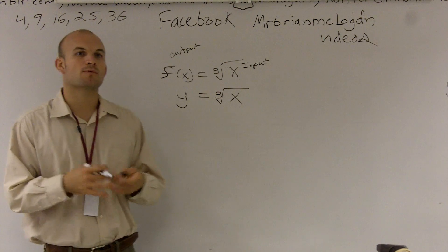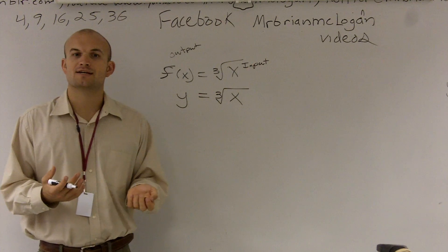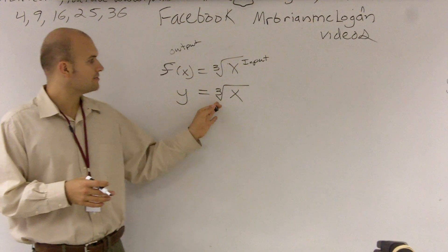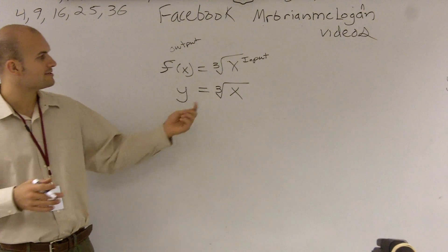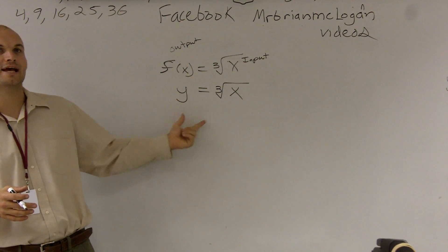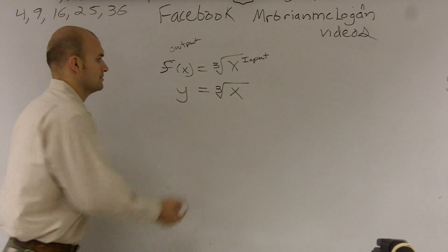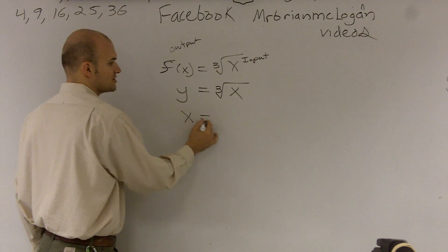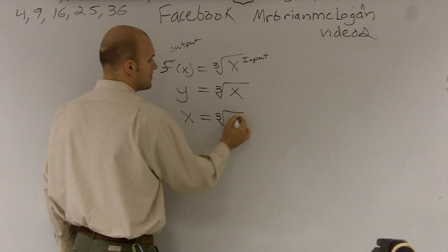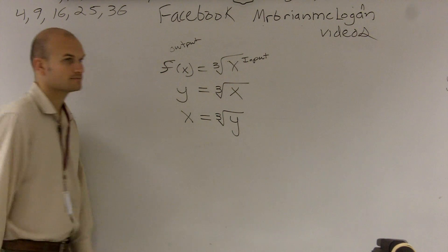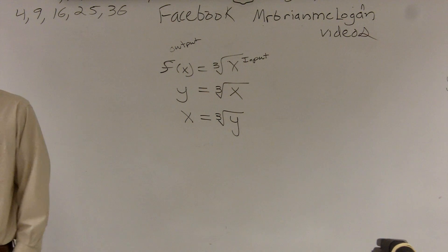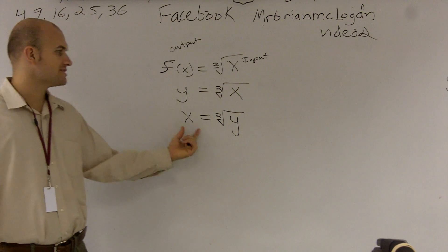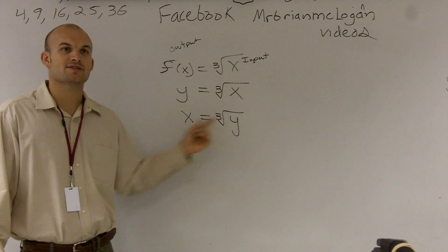So now, what we're going to do when we're trying to find the inverse is we are going to change our input and our output. To represent that, let's just switch our x and y values. First thing you do — go back to using y, and then interchange the x and y values.